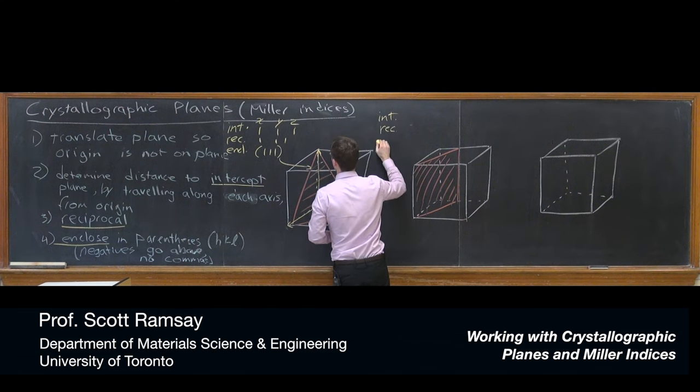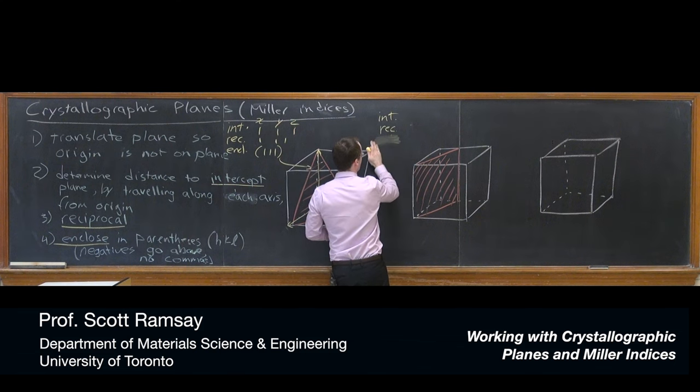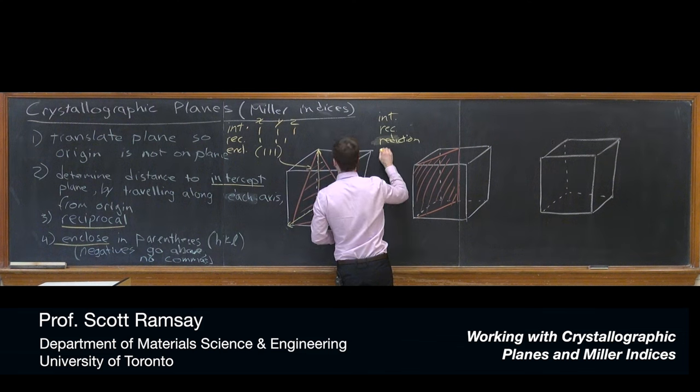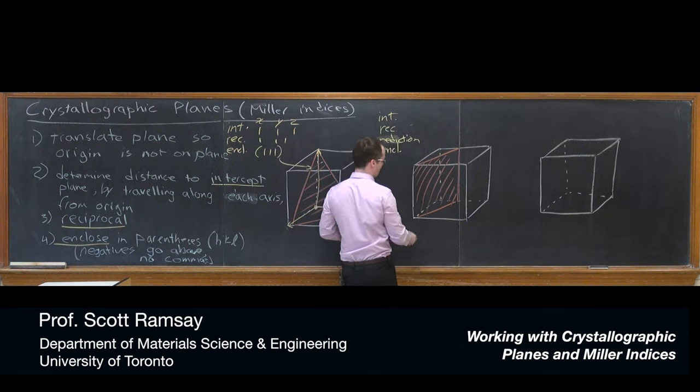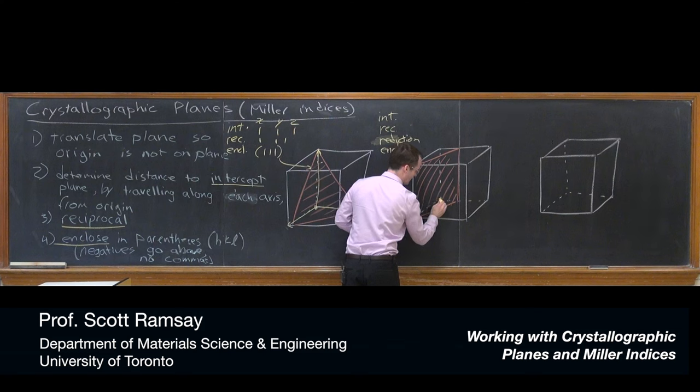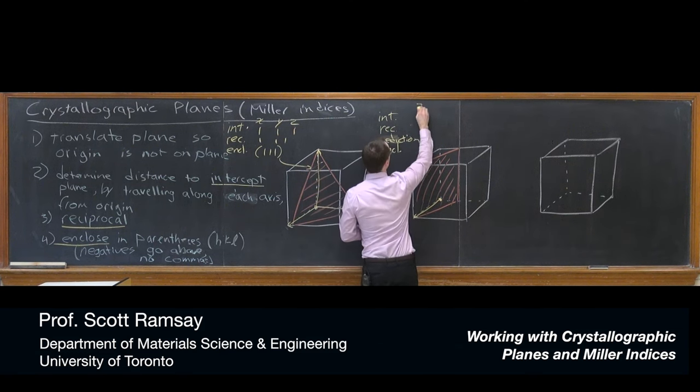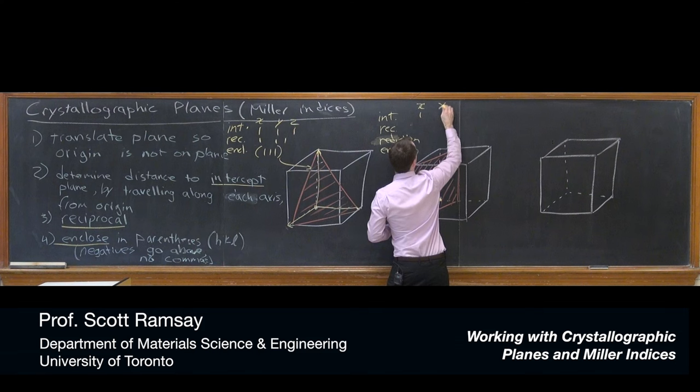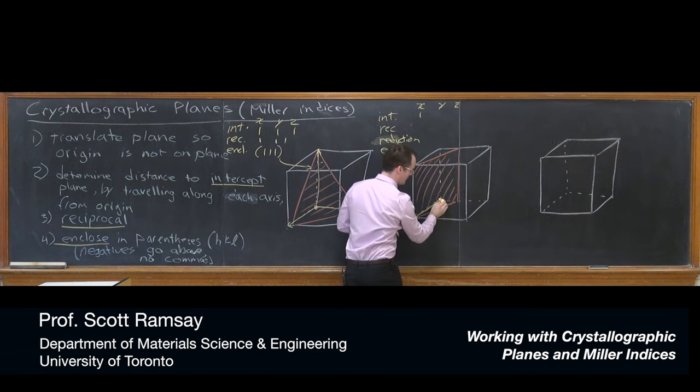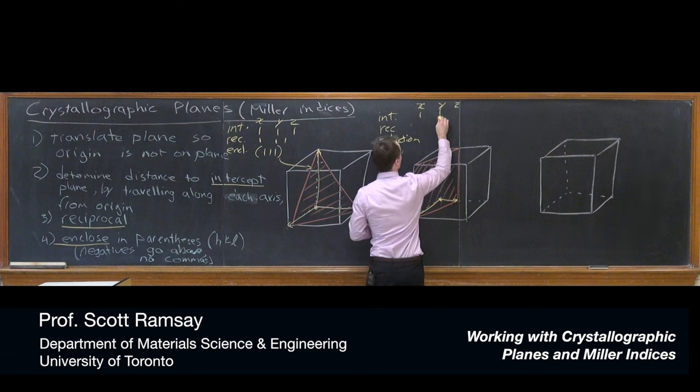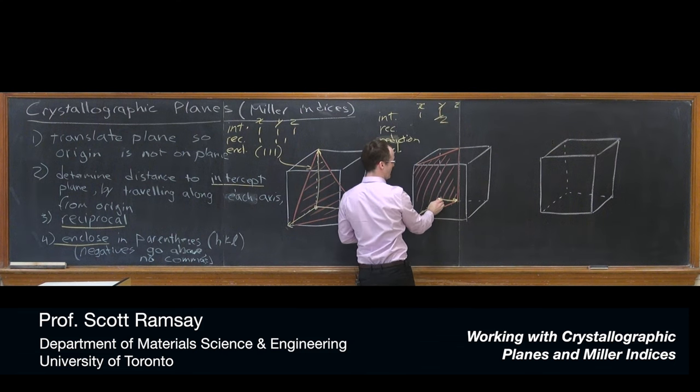I actually missed a step - reduction - and it's going to be important on this step. So again, we can start with this conventional origin. We would travel 1 in the X direction, a half lattice parameter in the Y, and how far would we travel in Z? It's actually parallel to Z, so we would travel infinitely far.